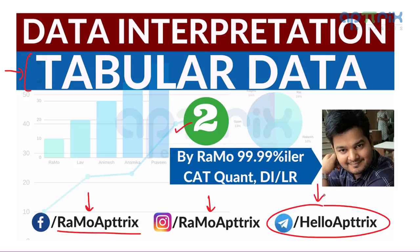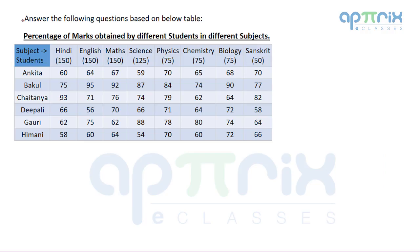Let's start the dataset now. Answer the following questions based on the below table. This table represents percentage of marks obtained by different students in different subjects.